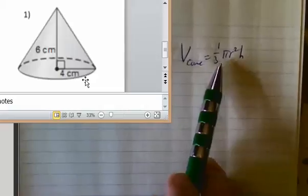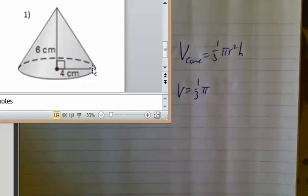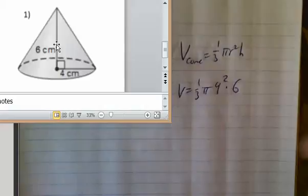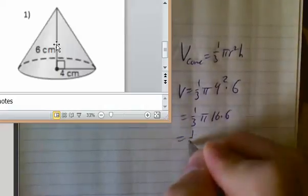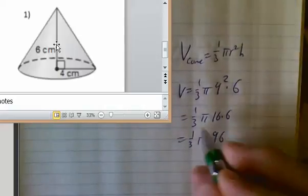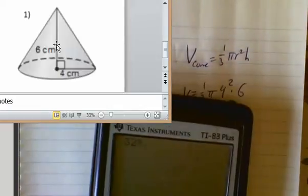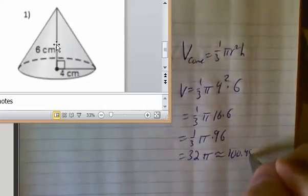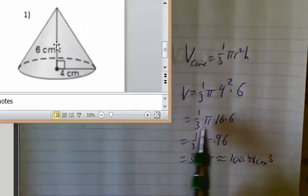For this one the volume would be one third π, the radius looks like it's 4 so 4 squared, and the height of the cone looks like it's 6. That's one third π times 16 times 6, that's one third π times 96. Is that divisible by 3? Yeah, so 32π, which in your calculators, I could have used the π button, but it's about 100.48 cubic centimeters. It doesn't really matter how you do this part, we've talked about that before. Just get yourself all the pieces of the puzzle and then simplify it within reason.